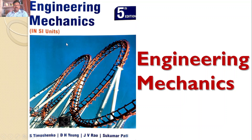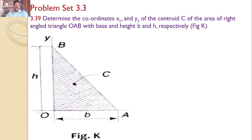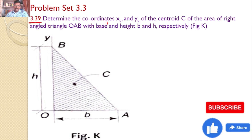Welcome to RK Tutorials. Solutions to Engineering Mechanics by S. Timoshenko, 5th edition. In this tutorial, we will discuss problem set 3.3 and problem number 3.39. Determine the coordinates XC and YC of the centroid C of the area of a right angle triangle OAB with base B and height H respectively. I would like to find the centroid for this right angle triangle with base B and height H.